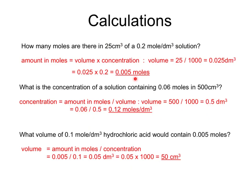Second question: what is the concentration of a solution containing 0.06 moles in 500 cm³? The volume needs converting — divide by 1000 to get 0.5 dm³. Rearranging the equation: concentration = moles ÷ volume = 0.06 ÷ 0.5 = 0.12 mol/dm³.